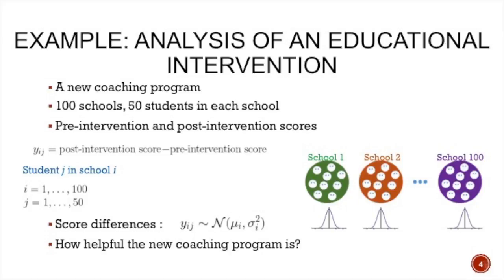You can see the 100 schools here. The score differences are different in each school and between different students. Some students have higher score differences; for some students it might be negative, meaning the coaching program didn't work. We can assume that all these scores in each school are coming from a normal distribution — if you plot the histogram, you'll get a bell-shaped curve. The ultimate question we want to answer is how helpful this new coaching program is.